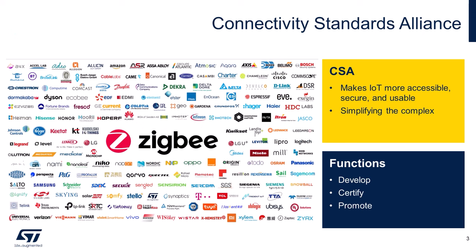ZigBee technology is governed by CSA, the Connectivity Standards Alliance. Established in 2002, it was initially called ZigBee Alliance. It was formed to create, maintain, and deliver open global standards for the IoT, originally based on ZigBee technology. Having evolved since its inception, the Alliance currently oversees multiple standards. CSA has been dedicated to simplifying the complex, creating an open path to IoT adoption and innovation.